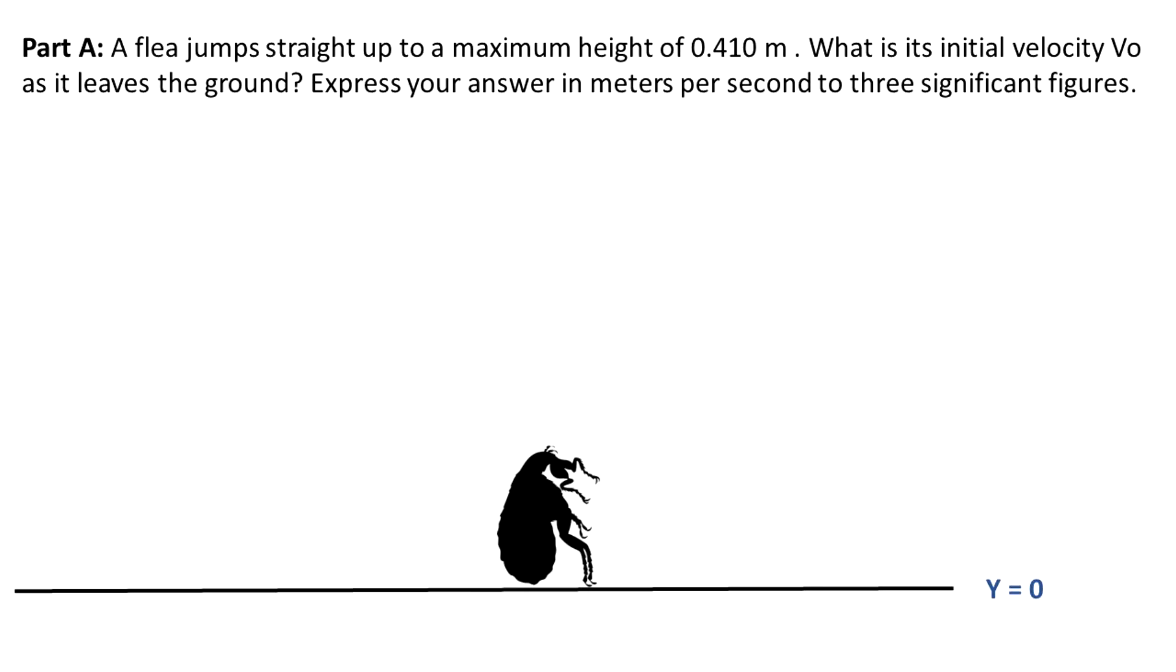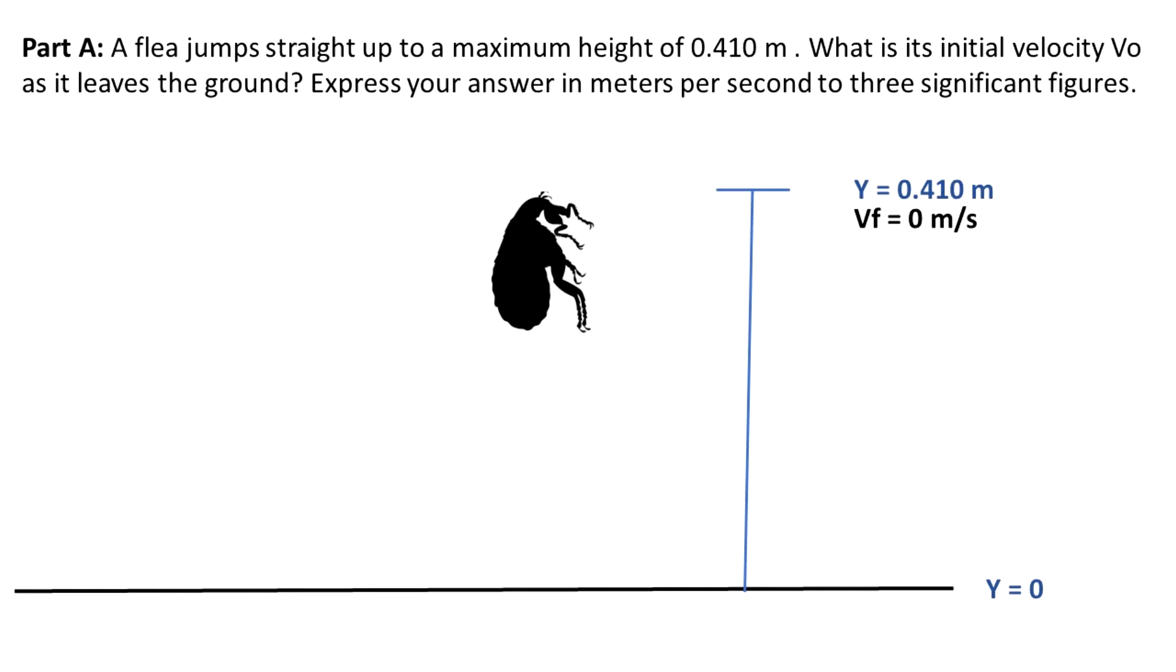So as we can see, the flea is on the ground, so y equals zero at time equals zero. That's the starting point. Then suddenly the flea jumps with an initial velocity of V0, and as we can see here, it gets to a maximum height of 0.41 meters.